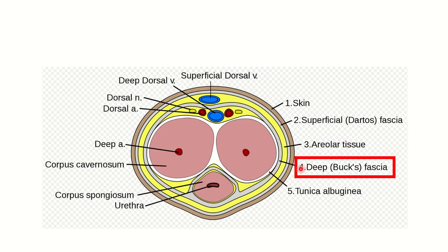Here again the deep fascia or Buck's fascia is shown. The deep fascia covers the whole length of the penis. The corpus cavernosum and corpus spongiosus are fully covered, and different structures located within the deep fascia include the dorsal artery of the penis, dorsal nerve of the penis, deep artery of the penis, and the urethra.